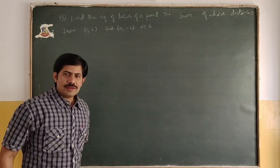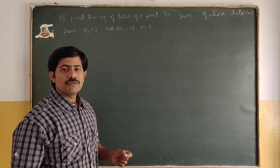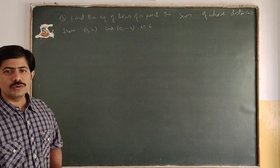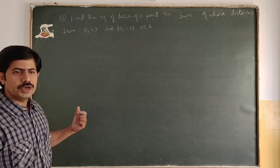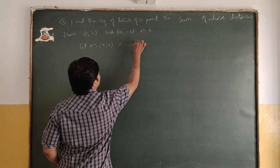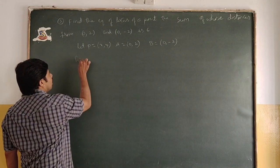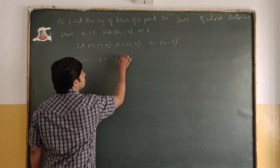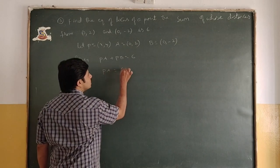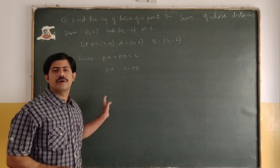Now you try this problem: find the equation of locus of a point, the sum of whose distances from (0,2) and (0,-2) is 6. Here sum of distances is given. Let P=(x,y), A=(0,2), B=(0,-2). The condition is PA + PB = 6, so PA = 6 - PB. Square both sides and continue as in the previous problem.